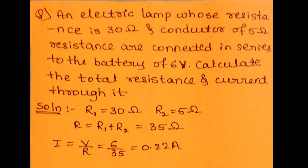Now let us solve an example. An electric lamp whose resistance is 30 Ohm and a conductor of 5 Ohm resistance are connected in series to a battery of 6 volts. Calculate the total resistance and current through it. Take R1 equal to 30 Ohm and R2 equal to 5 Ohm. Since the resistors are in series, the equivalent resistance R equals R1 plus R2 equals 35 Ohm. To find the total current, apply Ohm's law: I equal to V upon R, which equals 0.22 Ampere.